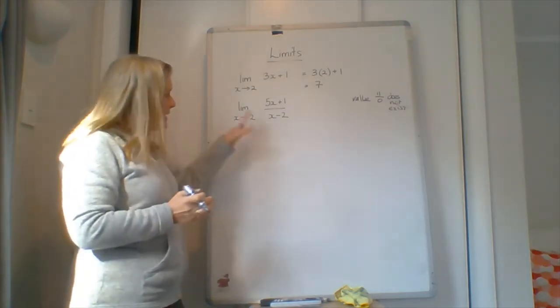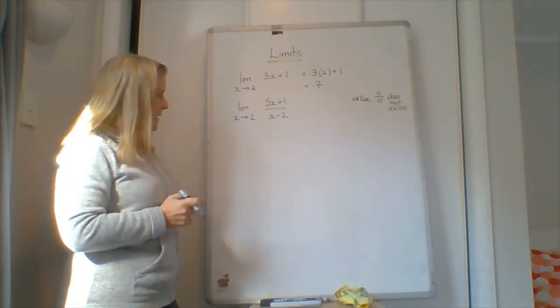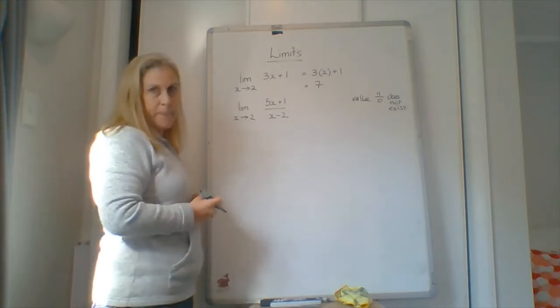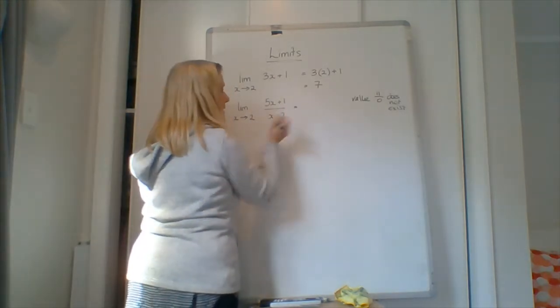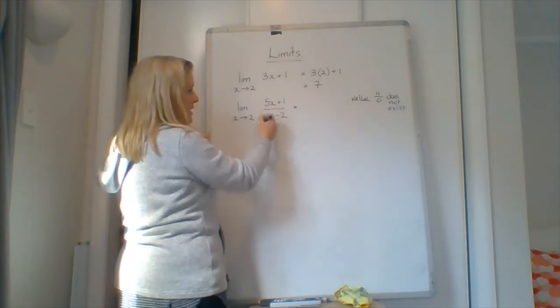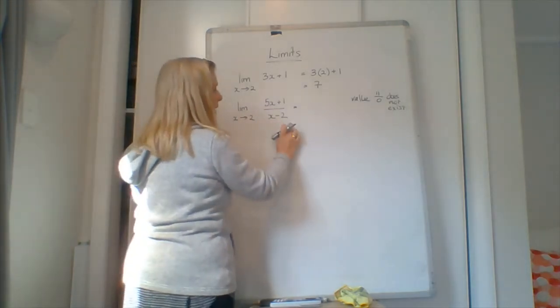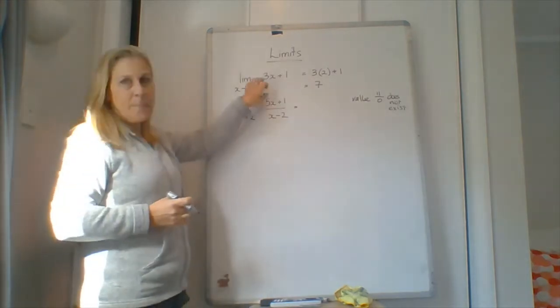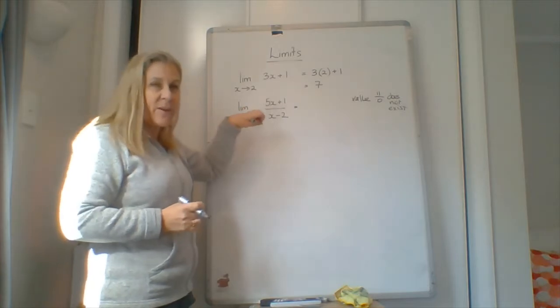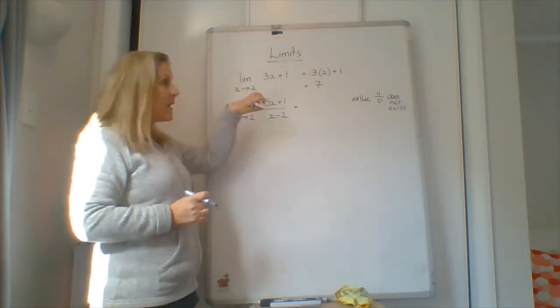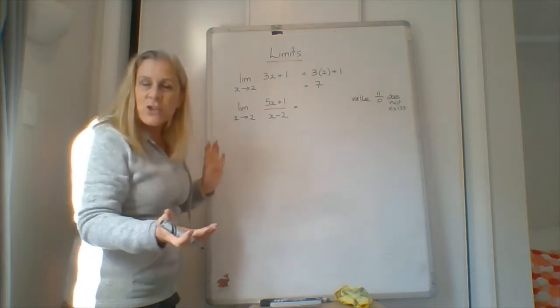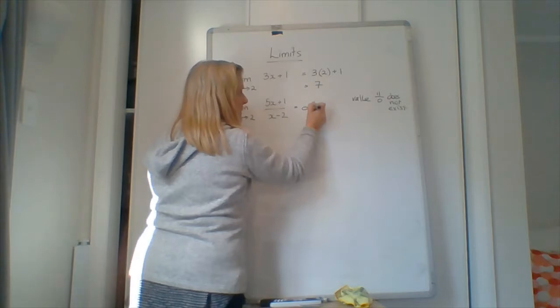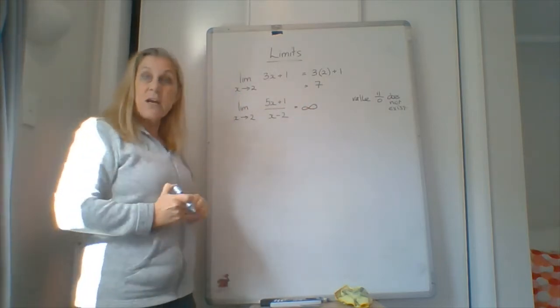So if we think about this, if we put 2 into here and 2 into here, we're getting something divided by 0. So a number divided by something very, very small. If it's very, very small, then the actual value would be very, very large. So this is going to actually be infinite. First time we've talked about infinity.